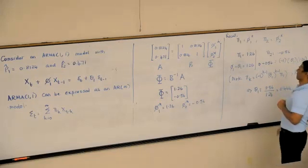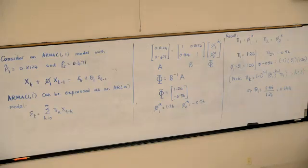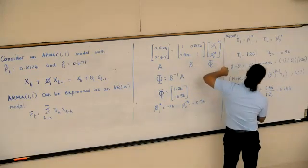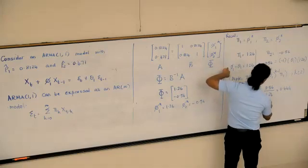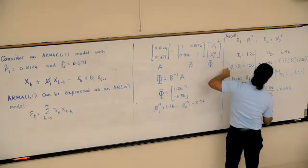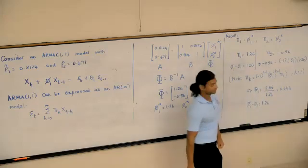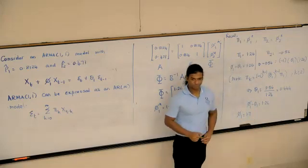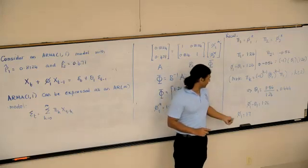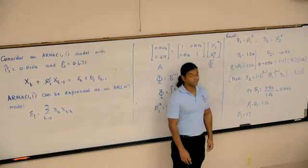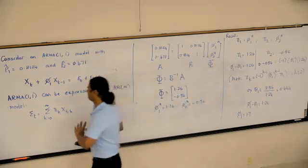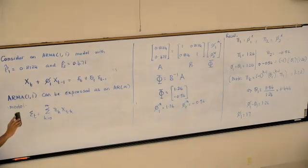So what is θ₁? I can solve for 0.444. Makes sense. 0.444. And if I know θ₁, I can easily find φ₁. Use the first equation. So φ₁ - θ₁ is 1.26. So φ₁ would be 1.7, right? Looking at the magnitudes of φ₁ and θ₁, we can conclude that it is not stationary. Right? We want that to be less than 1. But we did fit our model. Correct? So this is the model.